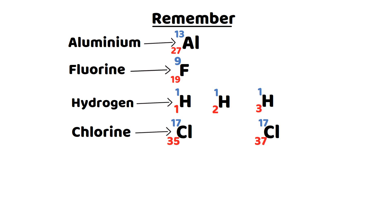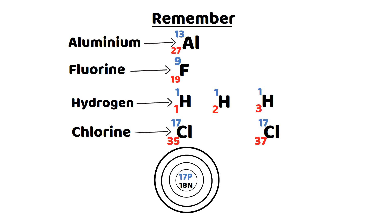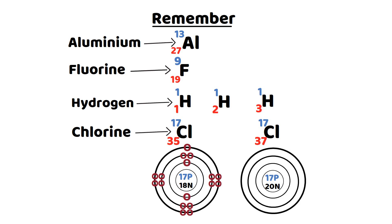The first isotope of chlorine, chlorine-35, has 17 protons and 18 neutrons in the nucleus, while 17 electrons are present arranged in three shells with an electronic configuration of 2, 8, 7. As these isotopes have the same atomic number and different atomic masses, for differentiation we normally write the atomic mass with the symbol — for example, chlorine-35 and chlorine-37.